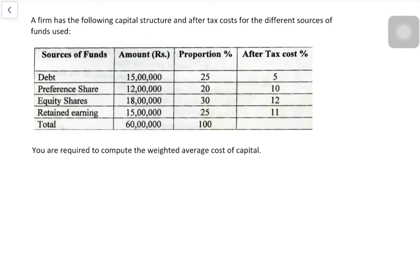Hello everyone, we are back with another question. This particular question is from the chapter on cost of capital and it is a very easy 15-marker question. A firm has the following capital structure and after-tax cost for different sources of funds: for debt, the amount is 15 lakh, proportion 25%, and after-tax cost is 5%; preference shares, 12 lakh, proportion 20%, and after-tax cost is 10%; equity share and retained earnings similarly.